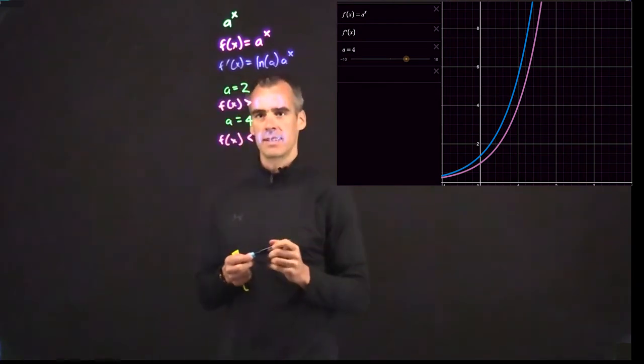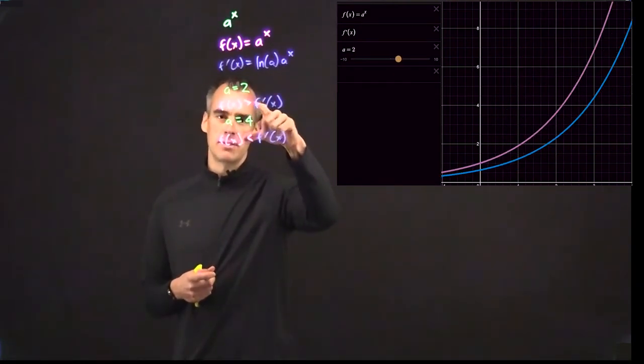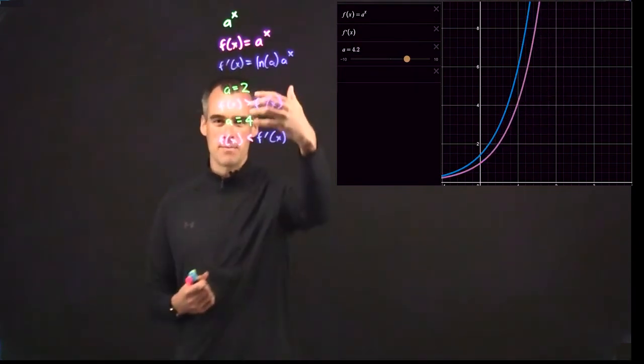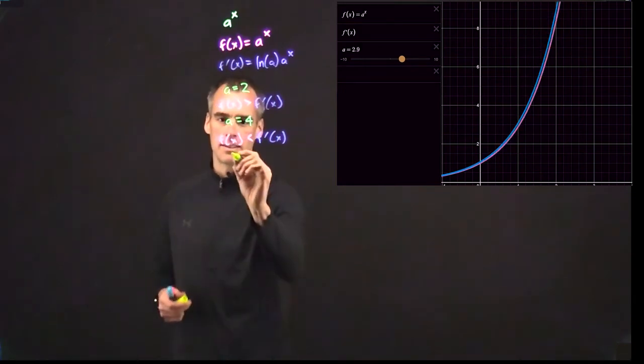If you can imagine on one side, a equals 2, that function is greater than its derivative. On the other side, a equals 4, it's less than. There's probably something in the middle where this actually equals out, and it turns out that number is e.